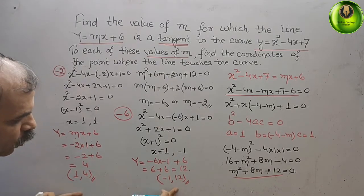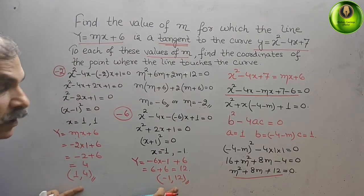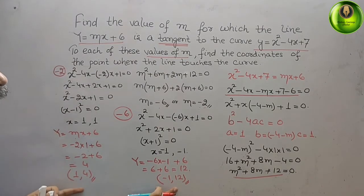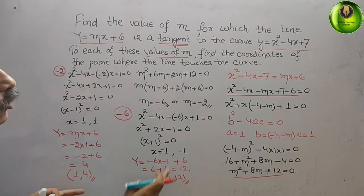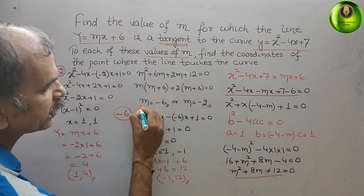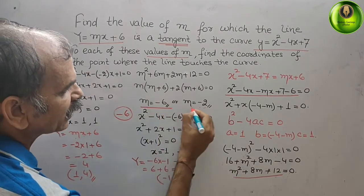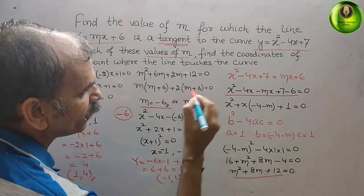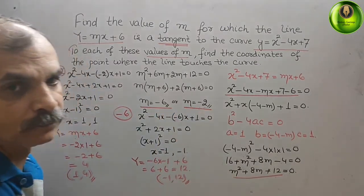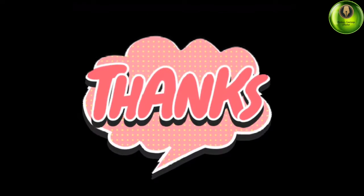So the two values are m = -6 with coordinate (-1, 12), and m = -2 with coordinate (1, 4).